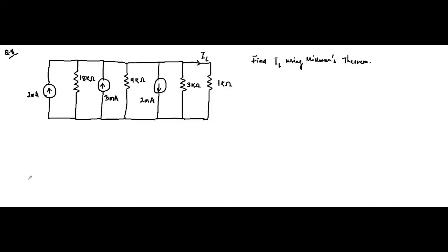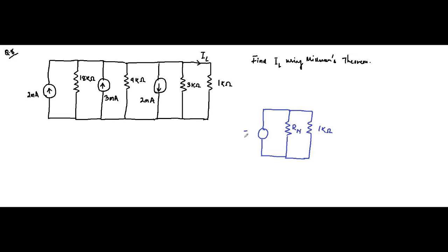Here we have to determine the current flowing through the 1 kilo ohm resistor. We will be using Millman's theorem to determine the Norton equivalent circuit. This is the 1 kilo ohm load, this is RN, and this is IN. I have not assigned the current direction yet — the Norton current will simply be the sum of the individual currents taking into account their direction.